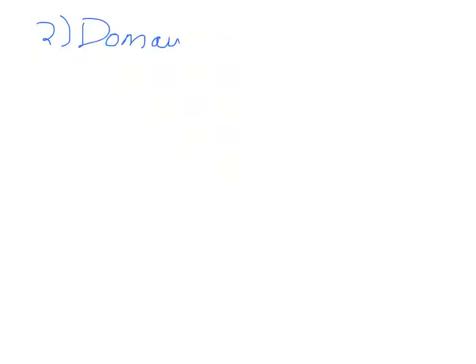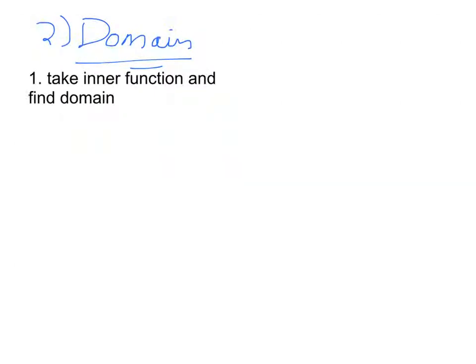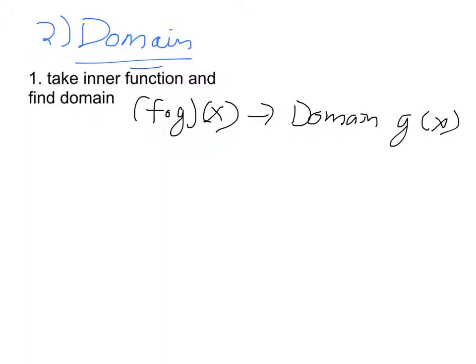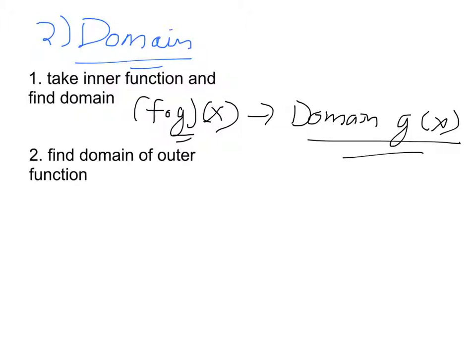The next thing you're going to want to do is find the domain. The domain for composite functions is a little harder. There are four main steps. Step 1: take the inner function and find its domain. So if you have f of g of x, find the domain of g of x — the inner function. Step 2: find the domain of the outer function, which in this case is f of x.